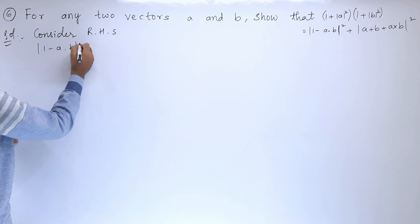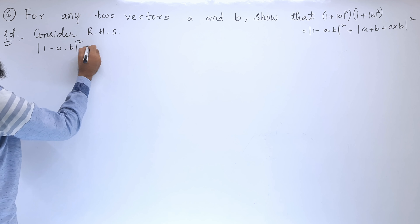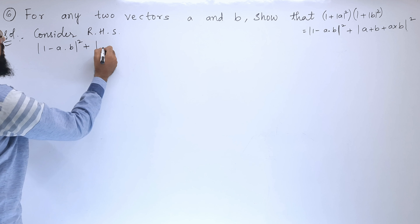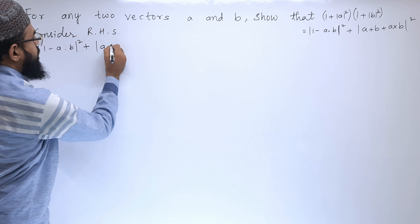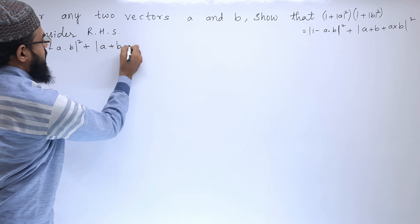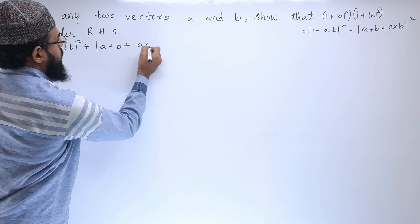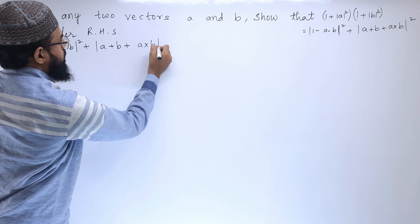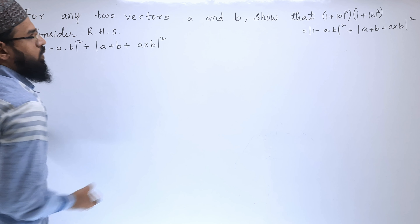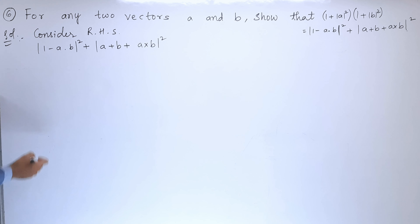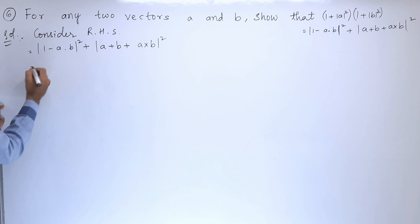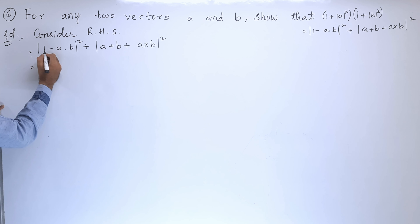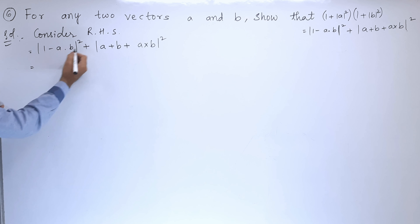Sixth problem: for any two vectors a and b, show that (1 + |a|²)(1 + |b|²) equals |1 - a·b|² + |a + b + a×b|².